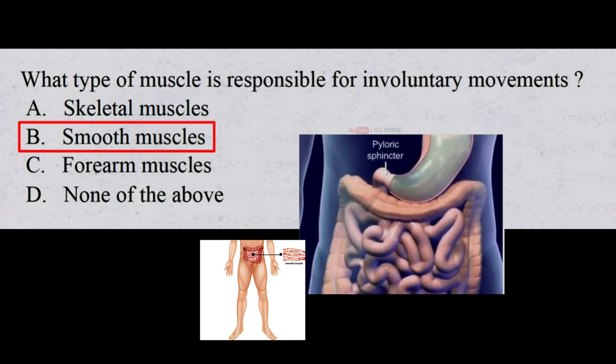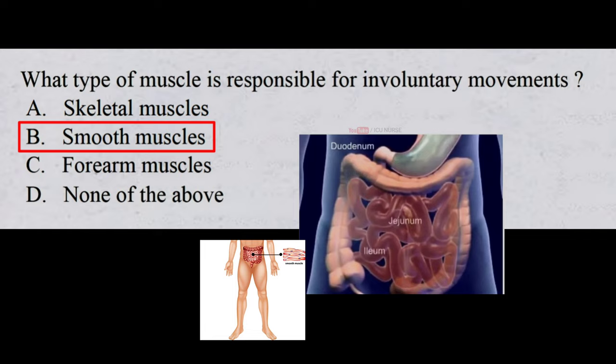An example of involuntary muscle movement controlled by smooth muscles is peristalsis.